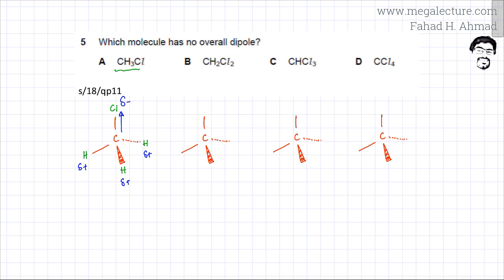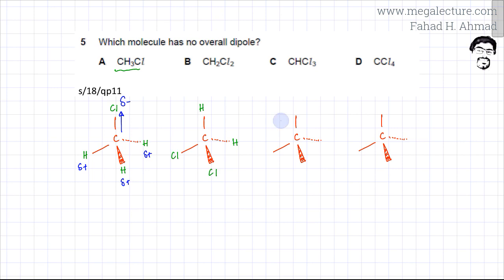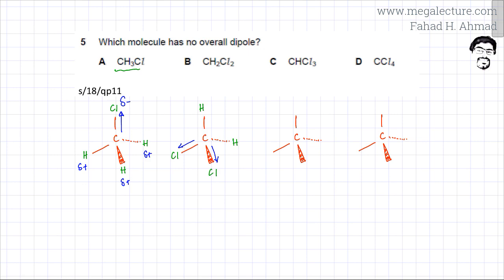Let's focus on the second one, CH₂Cl₂. Drawing the molecule, you have two hydrogens and two chlorines. Chlorine is more electronegative, so all the electrons are going to be dragged closer to chlorine. Since the chlorines are not on opposite sides of each other, the electrons overall in this molecule would be attracted closer to the two chlorines, giving them a partial negative charge, while the two hydrogens get a partial positive charge.